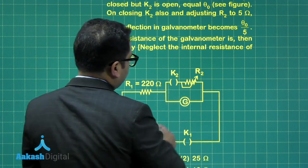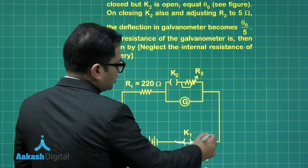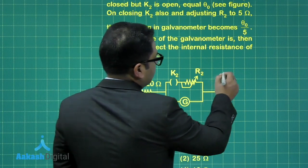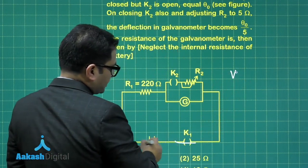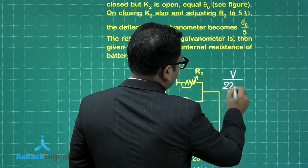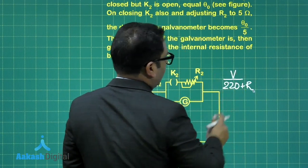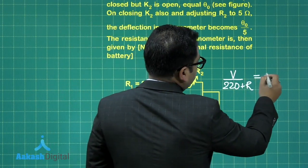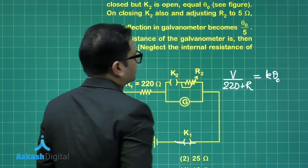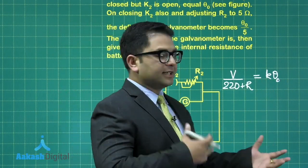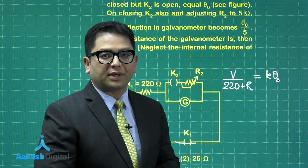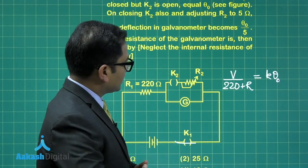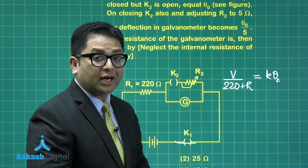Initially, K2 is open and K1 is closed, so the whole current would go in this way. How much would be the current? Let's say V is the potential difference of the battery, divided by 220 plus r (r is the resistance of the galvanometer). That's the current, and that is equal to k times θ₀. Because we know that current is directly proportional to θ, you can write in that given way because of the linear arrangement, linear design of the galvanometer. That's a very strong assumption without any failure.